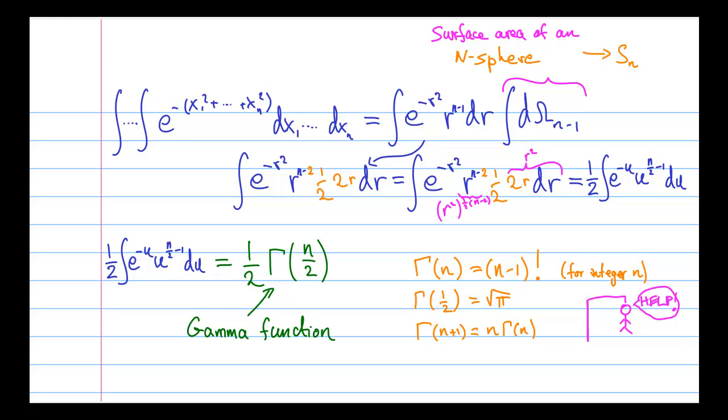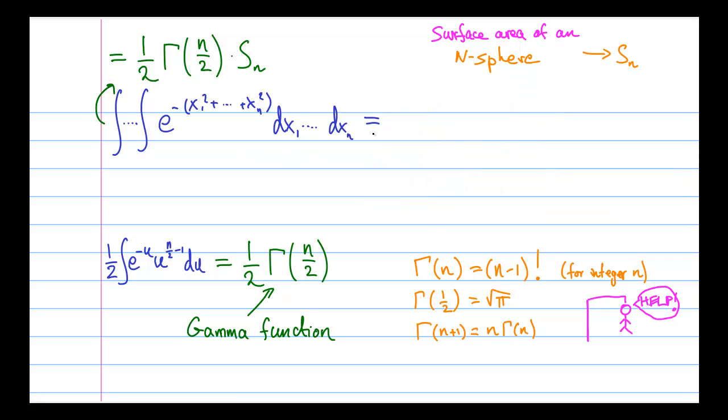So okay, cool. We just worked out the radial integral and guess what? We pretty much know the answer. Right? Because we said that the angular part of the integral is something we called S sub n, the surface area of an n-sphere. And the radial part of the integral is the expression involving the gamma function.